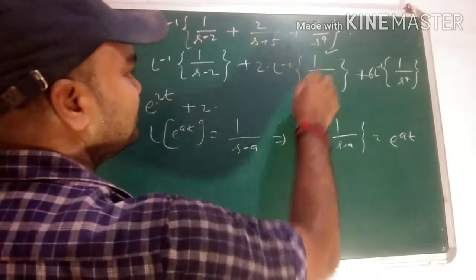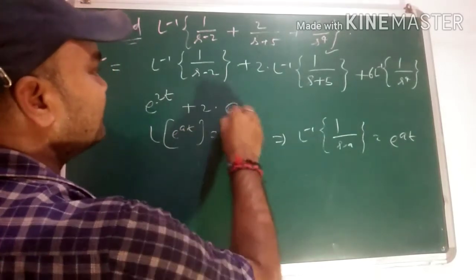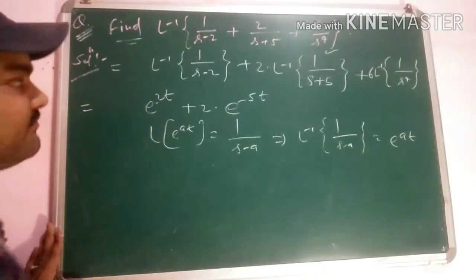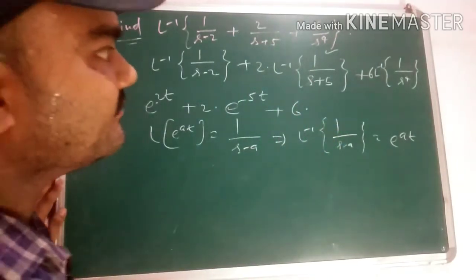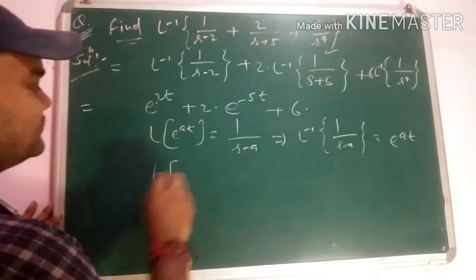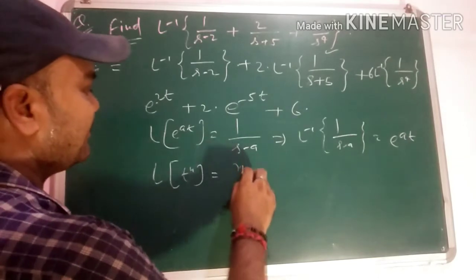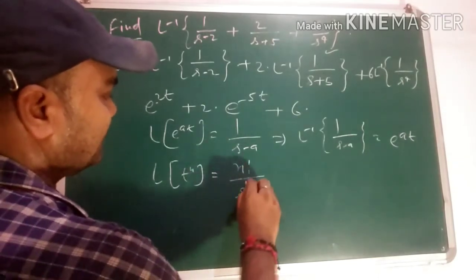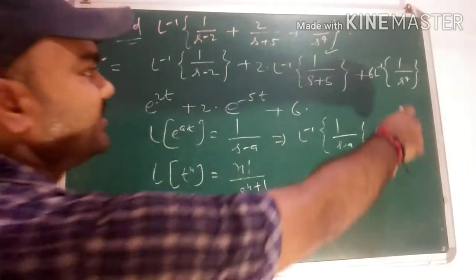Similarly, L inverse [1/(s+5)] gives e^(-5t), since s+5 means s-(-5), so a = -5. For the third term, L inverse [1/s^4], we use the formula: Laplace of t^n is n!/s^(n+1), so L inverse [1/s^(n+1)] = t^n / n!.